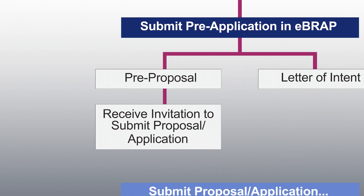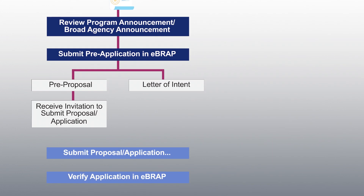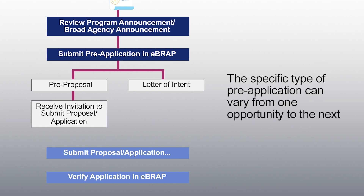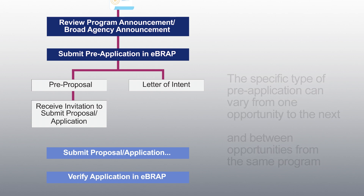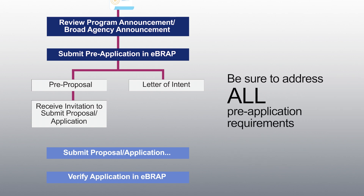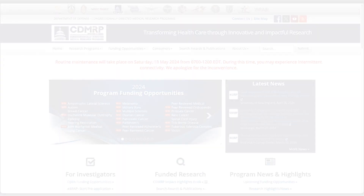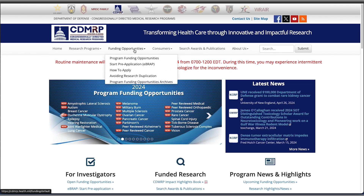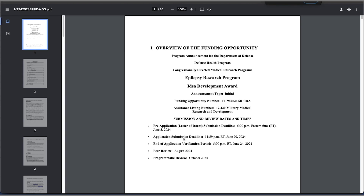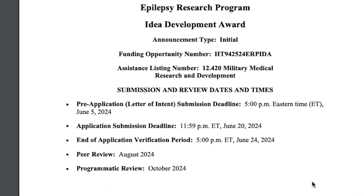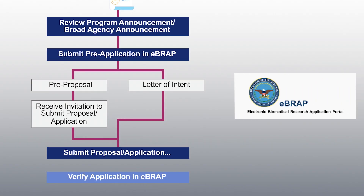You need to carefully read each funding opportunity you are applying to. The specific type of pre-application can vary from one opportunity to the next and can even vary between opportunities from the same program. Be sure to address all pre-application requirements outlined in the funding opportunity. Always give yourself enough time to write and submit the pre-application and resolve issues, if needed, before the pre-application deadline listed on the first page of the funding opportunity. Then, please submit your pre-application on eBRAP.